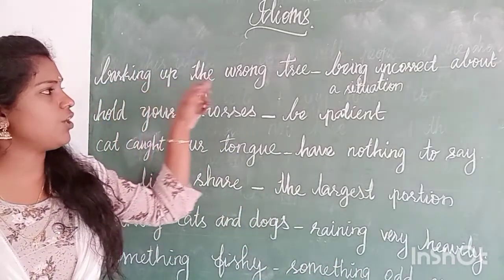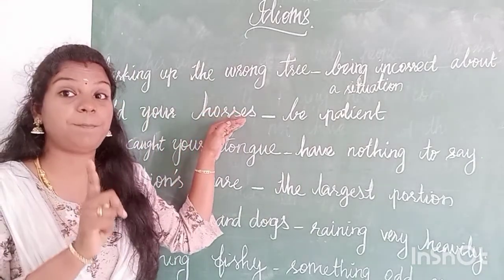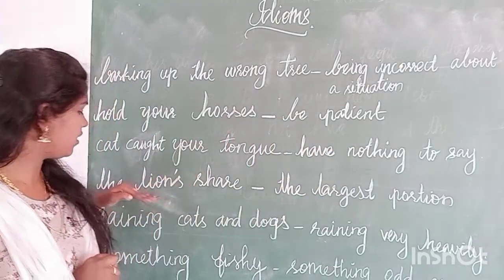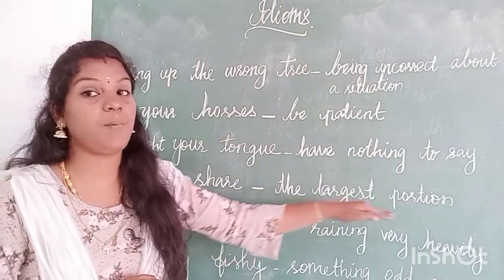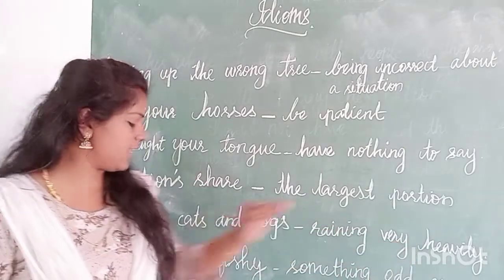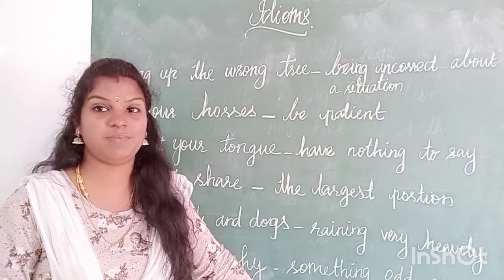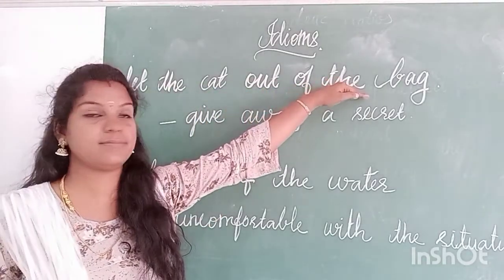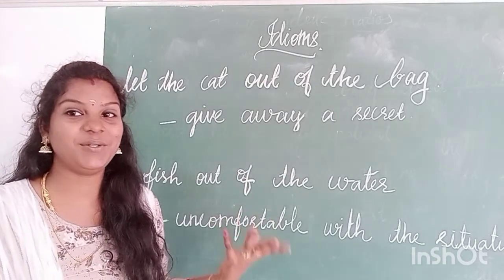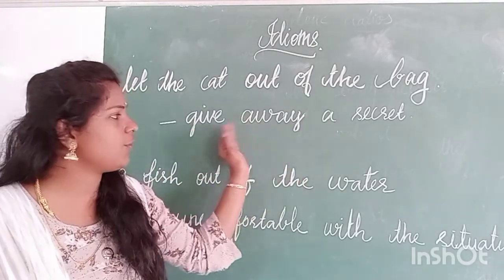Once again: barking up the wrong tree — being incorrect about the situation. Hold your horses — be patient. Cat got your tongue — have nothing to say. The lion's share — the largest portion. Raining cats and dogs — raining very heavily. Something fishy — something odd or suspicious. Two more: 'let the cat out of the bag.' Does it mean a cat is in a bag and we take it out? No — in an idiom the meaning is different. Let the cat out of the bag means give away a secret.